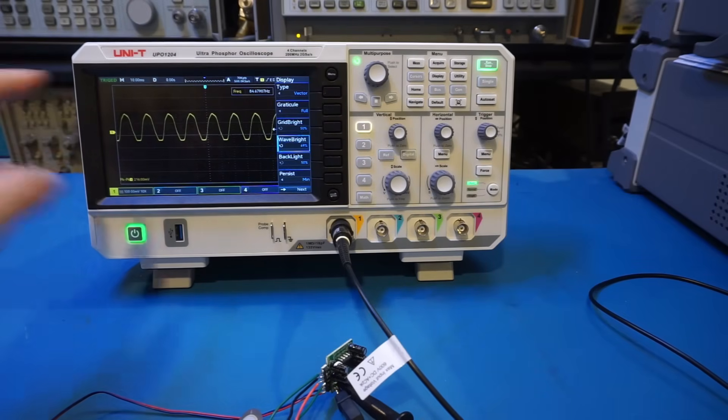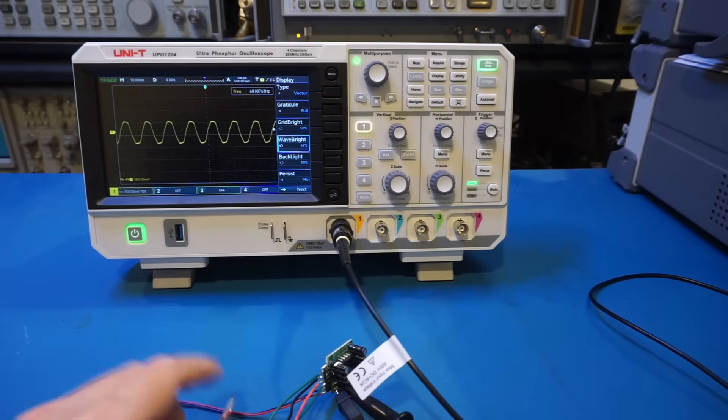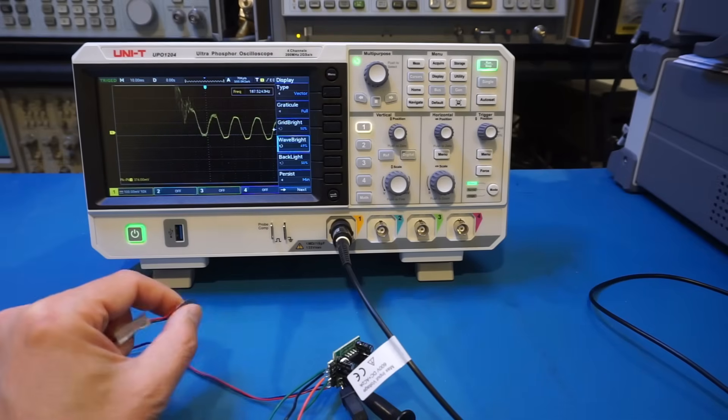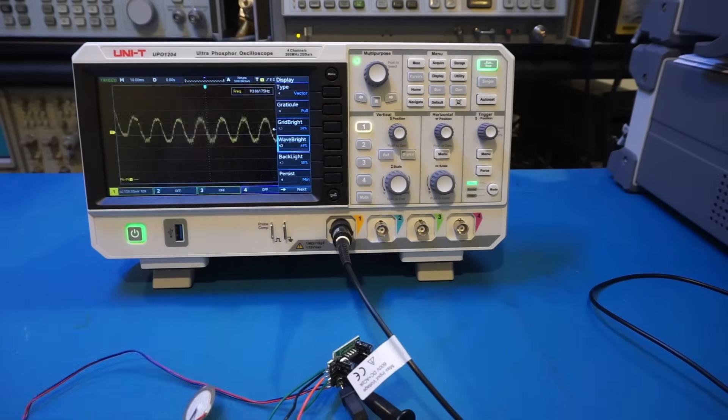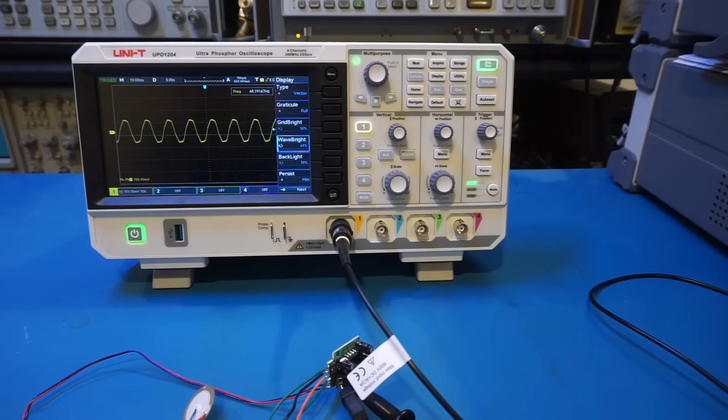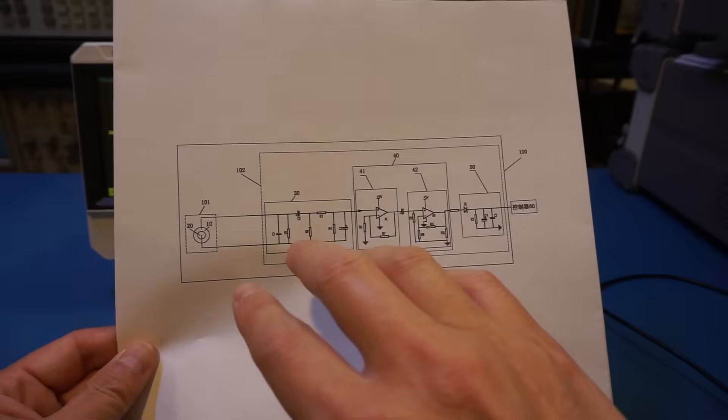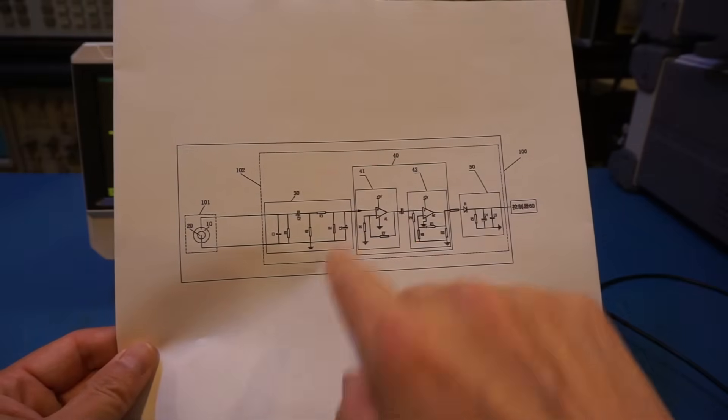Besides the noise you see on the screen here, by the way, these are roughly 60 hertz signal from mains interference. But if I tap on the sensor, you can see that the sensor indeed works. There's not too much to see here, but that is the basic behavior of a piezoelectric sensor. The mains frequency interference is not going to be a problem, as the circuit is going to filter out that frequency. As you see on the diagram here from the patent, we do have some filter at the input side, so the mains frequency is going to be filtered out.